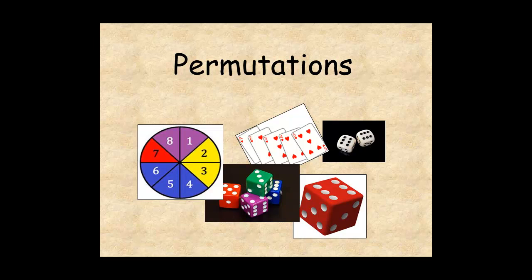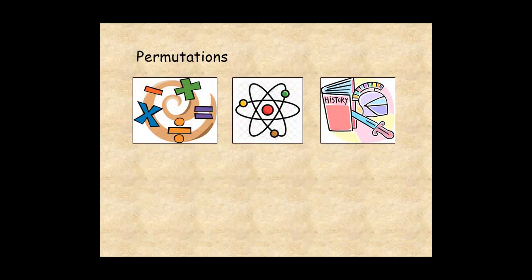This lesson shows you how to calculate permutations. A permutation is an arrangement or listing of objects when the order matters.